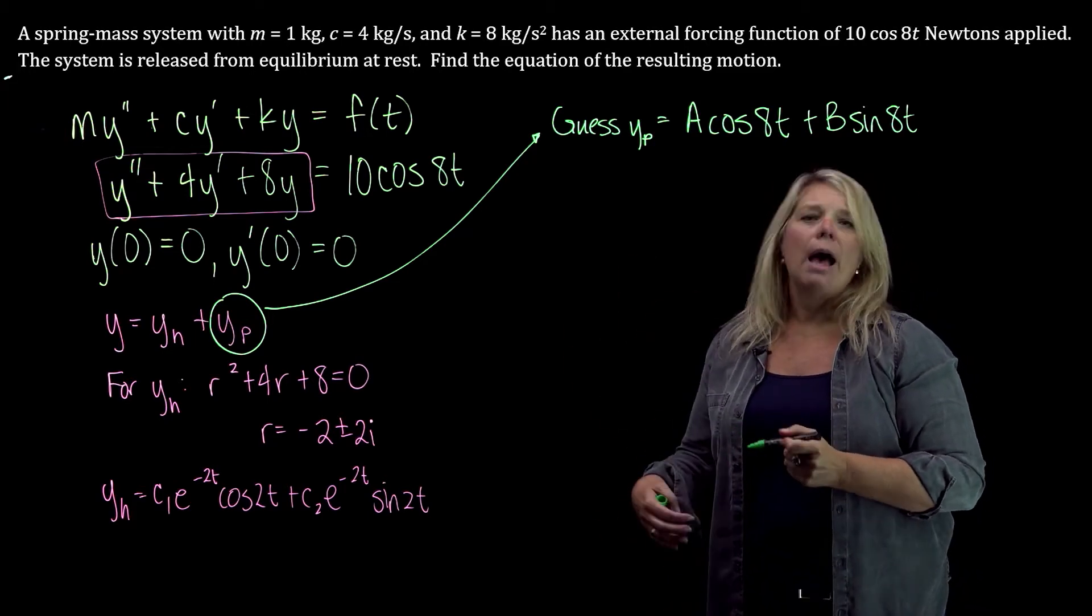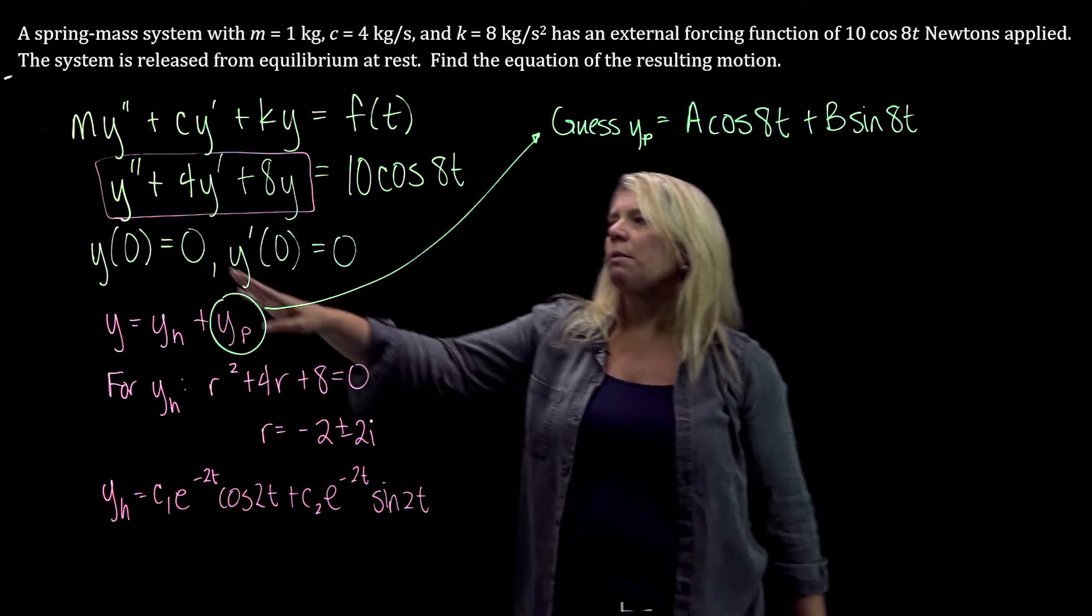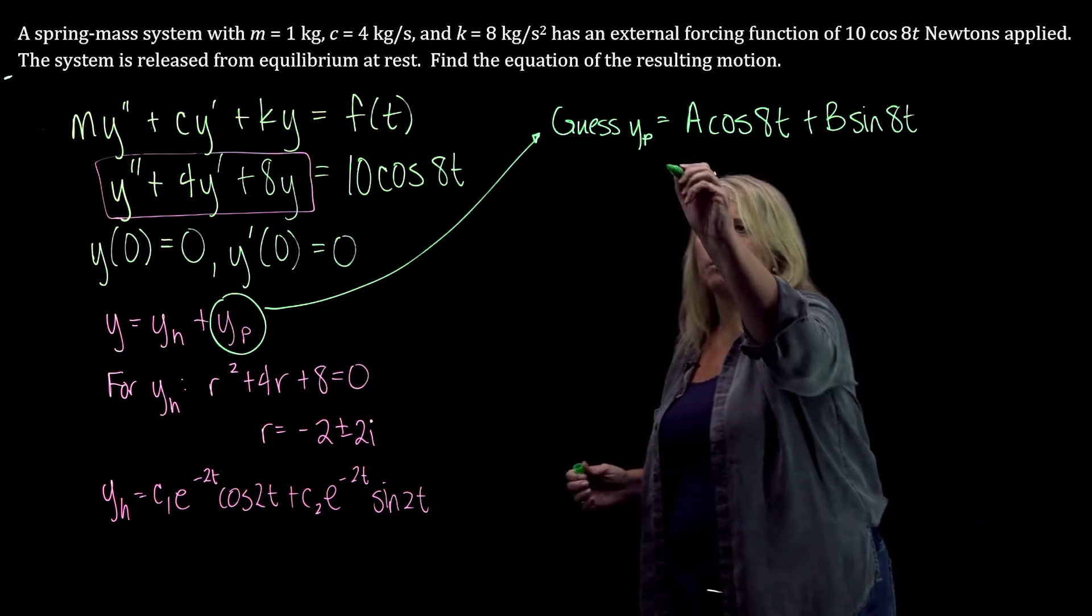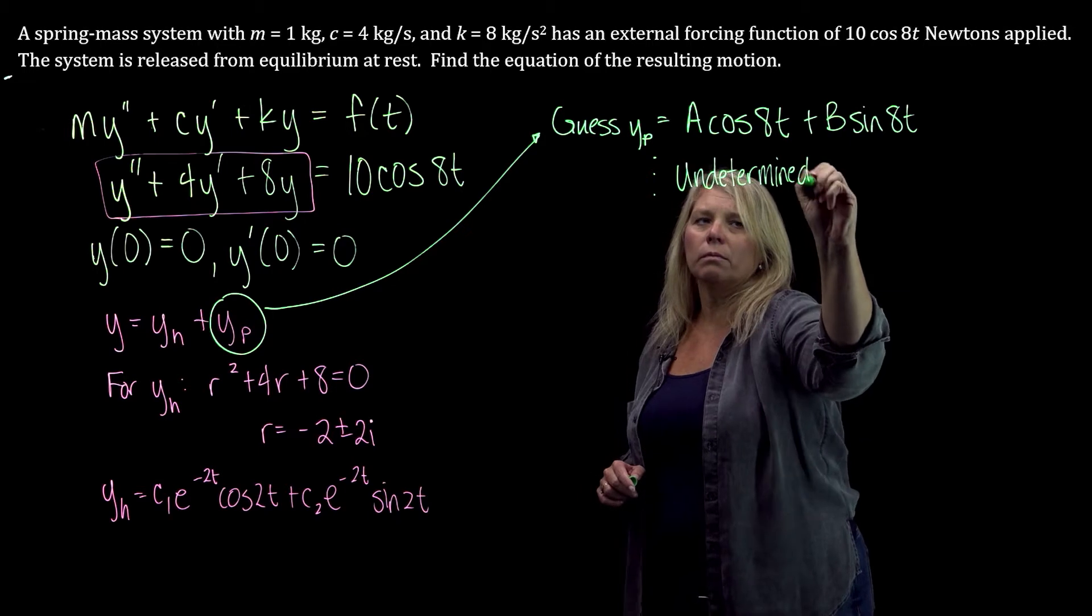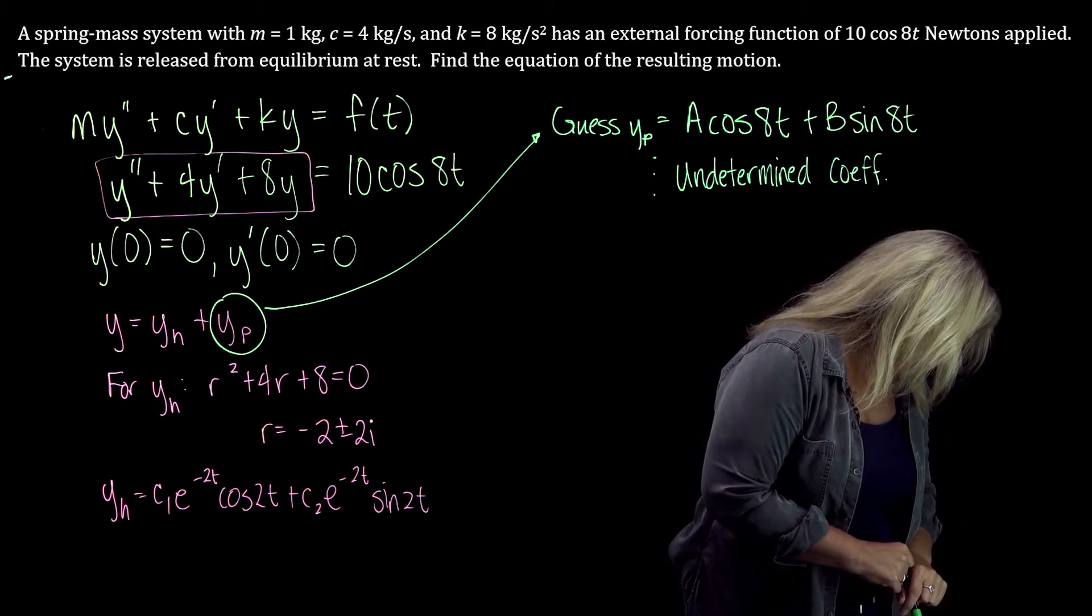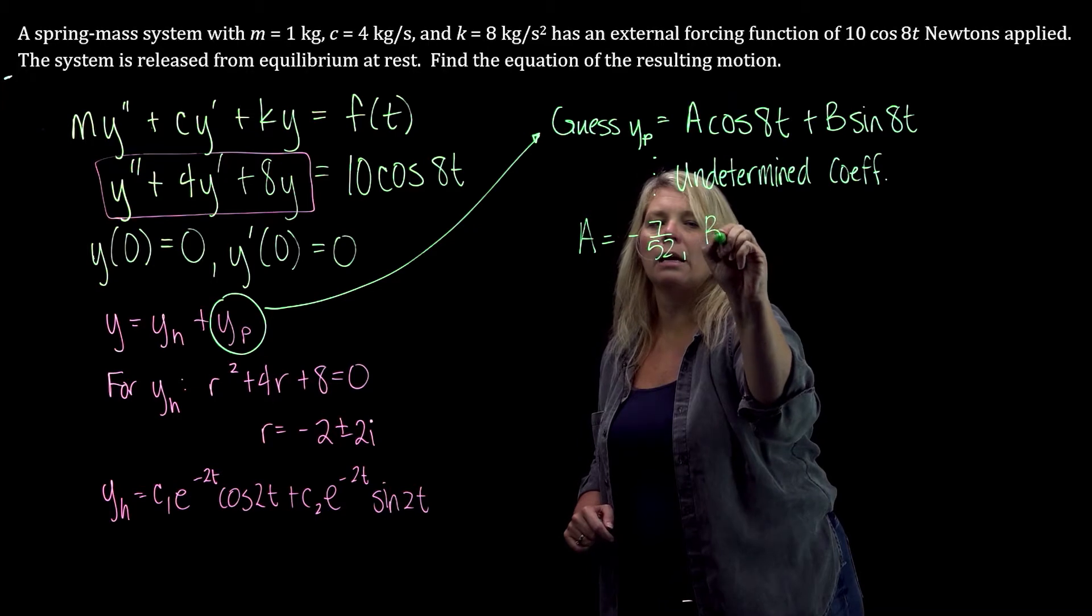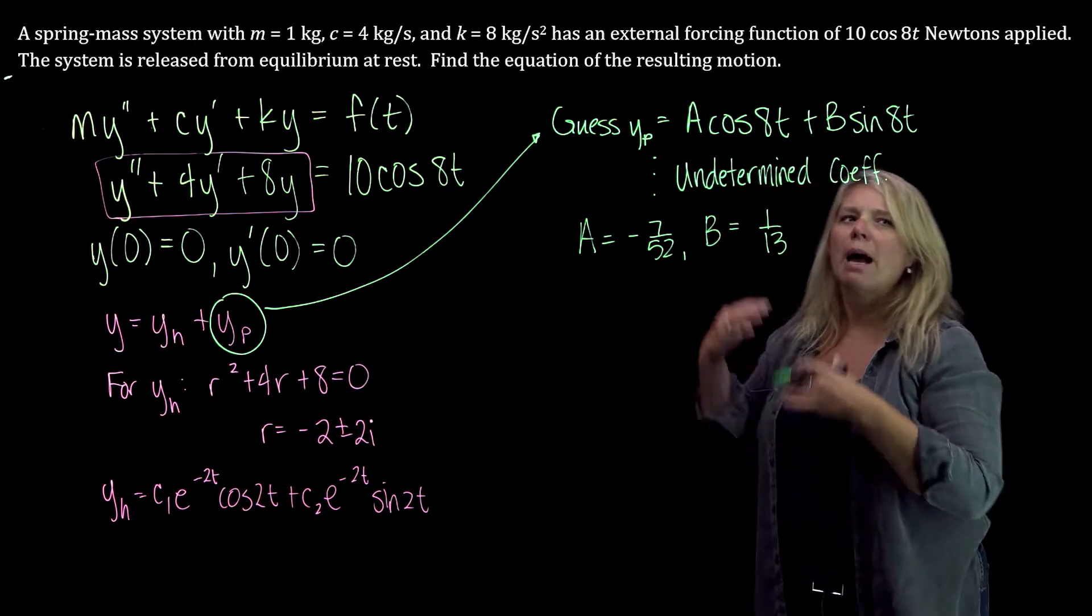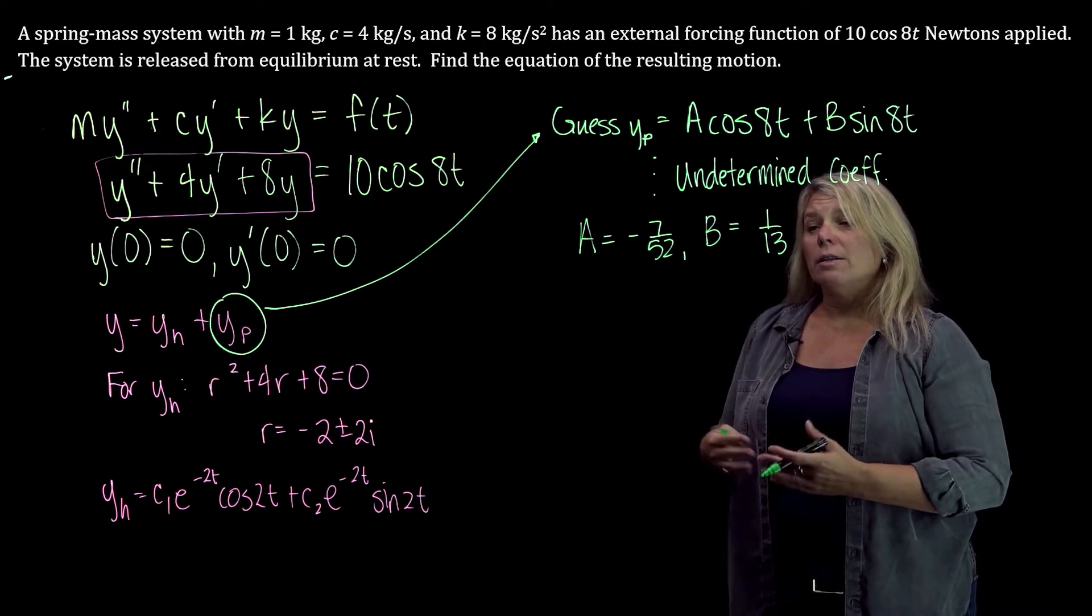So that's the appropriate guess. I would go ahead and find the first and second derivatives, y prime and y double prime, substitute them into the differential equation, and y in, group my like terms. I end up solving a little system of equations. I'm going to skip that. We did that before. I'm using undetermined coefficients if you need to look that up. And we end up with a equals negative 7 over 52 and b equals 1 over 13. So there's some algebra of solving a system. You can use your matrix function on your calculator to solve that system. So that gives our form here for our general solution.